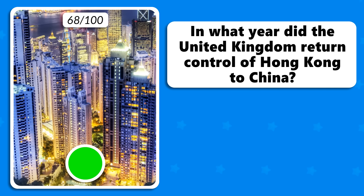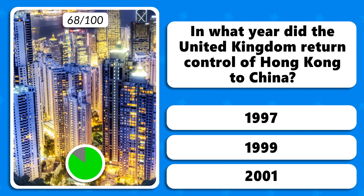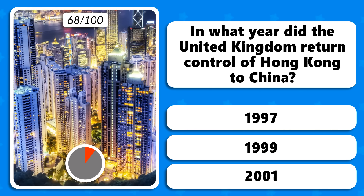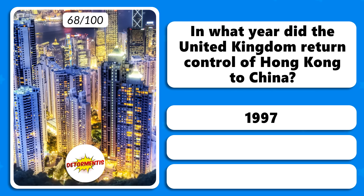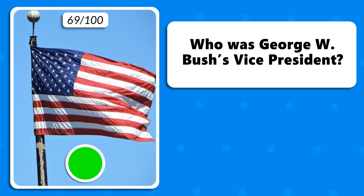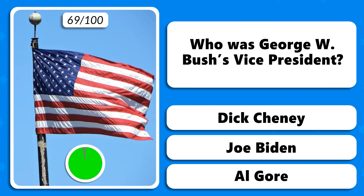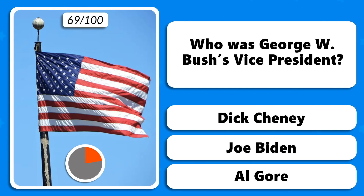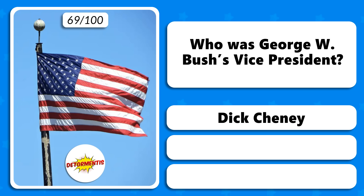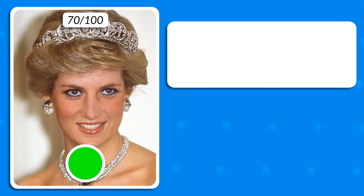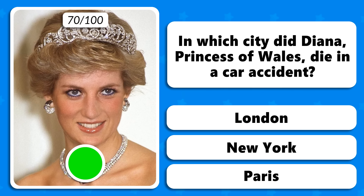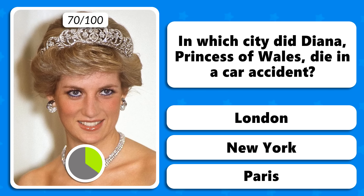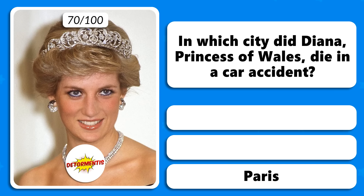In what year did the United Kingdom return the control of Hong Kong to China — 1997, 1999 or 2001? 1997. Who was George W. Bush's Vice President — Dick Cheney, Joe Biden or Al Gore? Dick Cheney. In which city did Diana, Princess of Wales, die in a car accident — London, New York or Paris? In Paris.